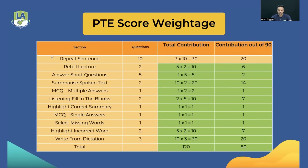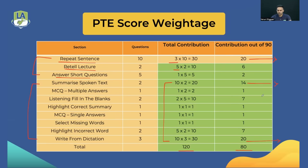For listening, points come from three speaking tasks — Repeat Sentence, Re-tell Lecture, and Answer Short Questions — plus eight question types from the listening module itself. Each Repeat Sentence gives three content points into listening; each Re-tell Lecture gives five points. The total for listening is 120 raw points. When converted out of 80, the most contributing tasks are Repeat Sentence and Write From Dictation, followed by Summarize Spoken Text and Listening Fill in the Blanks.